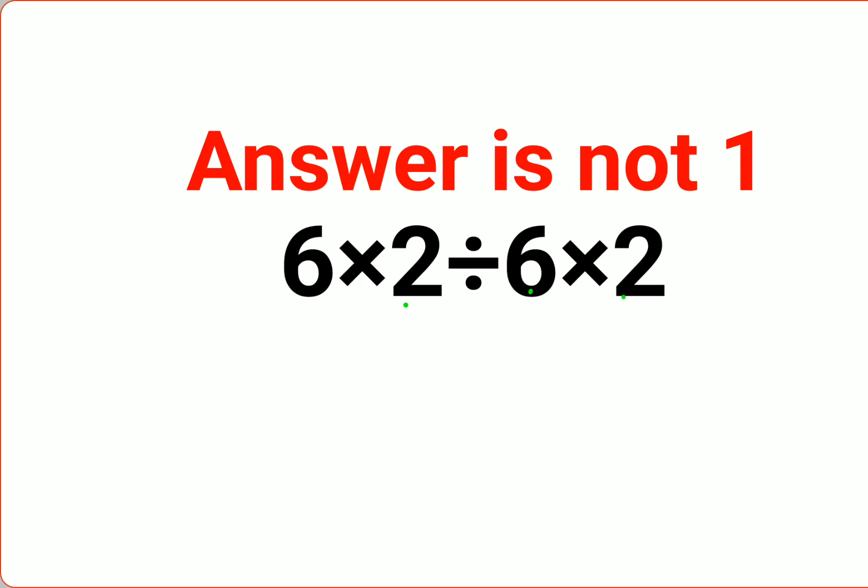Now here a lot of people think that the answer for this one is supposed to be 1 and that is incorrect. Please understand whenever you have these kinds of sums which have just division and multiplication, please remember both of them are holding equal precedence.